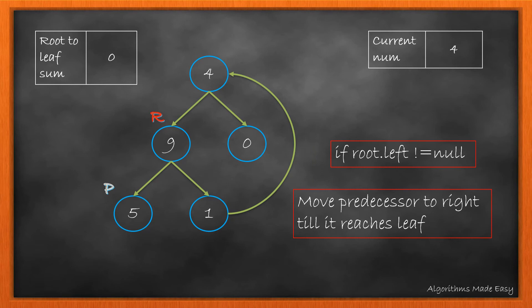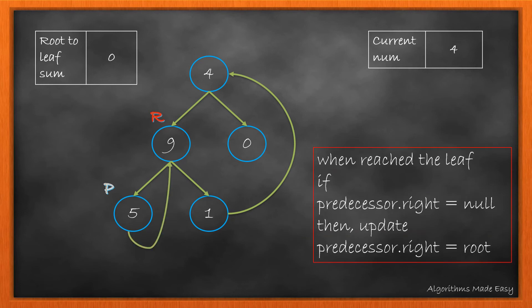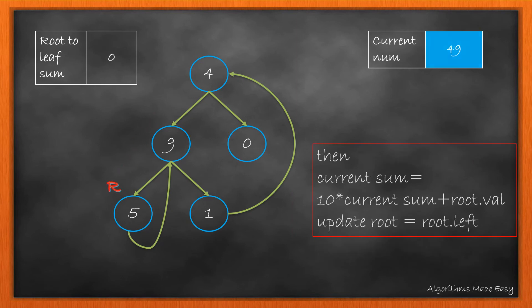As root.left is not null, we again start making predecessor as left. Now as there is no right, the predecessor becomes 5. We see that there is no link, so we create a link of predecessor to root. Now we update current number and update root to left.